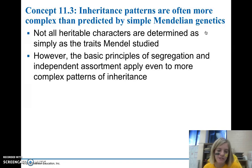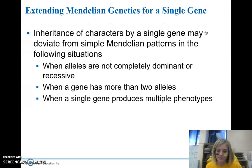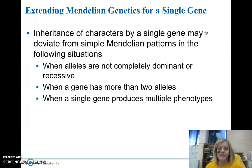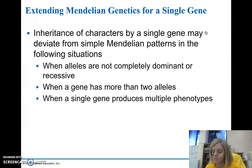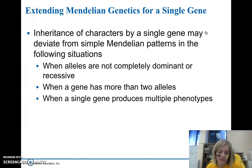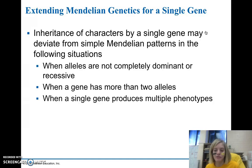The principles of segregation and independent assortment still apply. When we look at single genes, they may have inheritance patterns that deviate from simple Mendelian inheritance. We might have alleles that are not completely dominant or completely recessive, genes with more than two alleles, or one gene that gives us a variety of phenotypes.